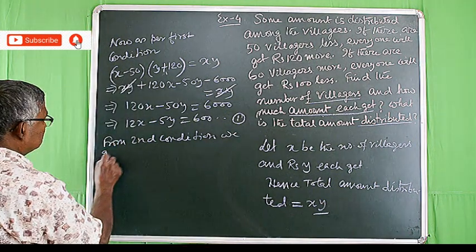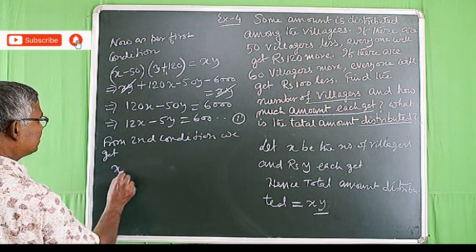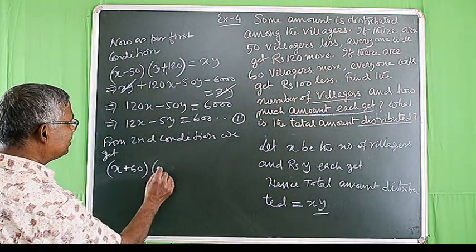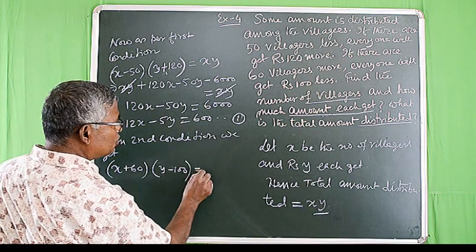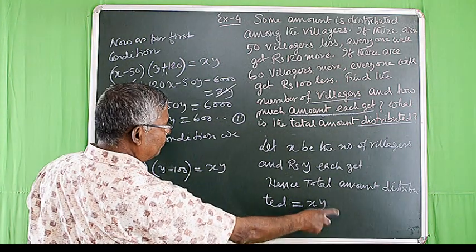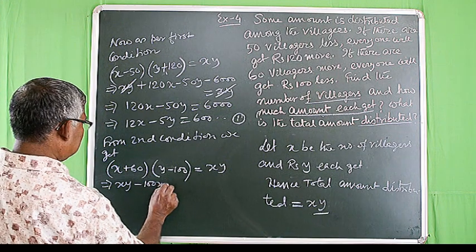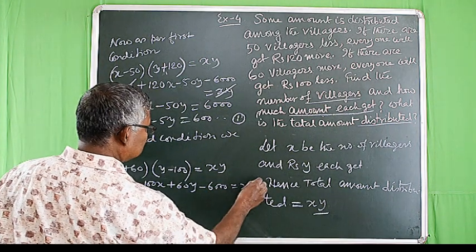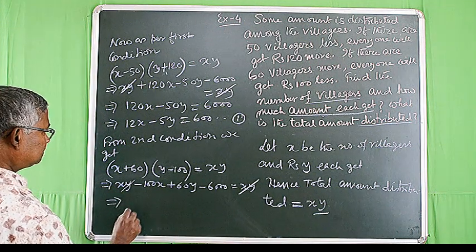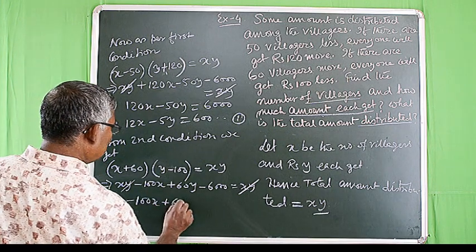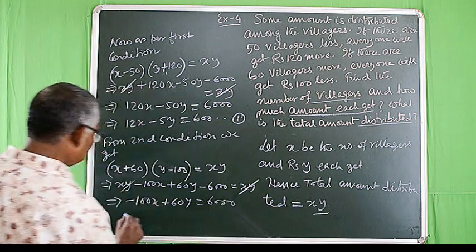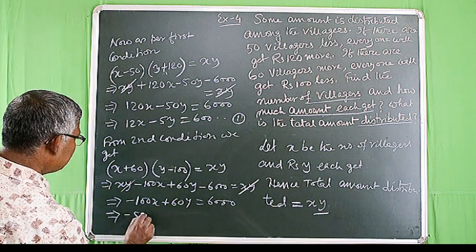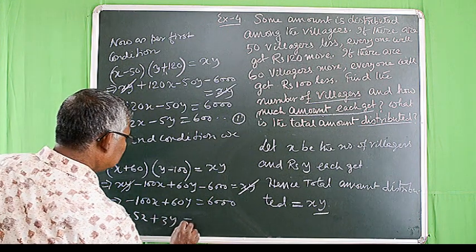From the second condition: (x + 60)(y - 100) = xy, expanding gives xy - 100x + 60y - 6000 = xy, so -5x + 3y = 300. Suppose it is equation number 2.